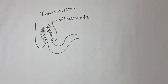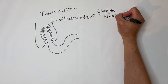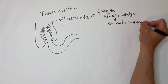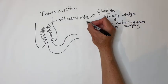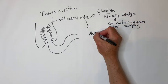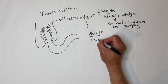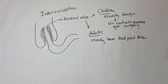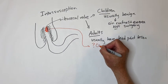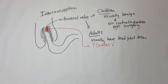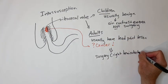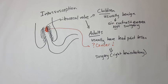Intussusception is common at the ileocecal valve. In children, it is commonly due to benign enlarged lymph nodes, so try air contrast enema to reduce it and don't operate. In adults, however, there is usually a lead point that is malignant or will lead to recurrent episodes, so take ileocecal intussusception in adults to the OR for resection.